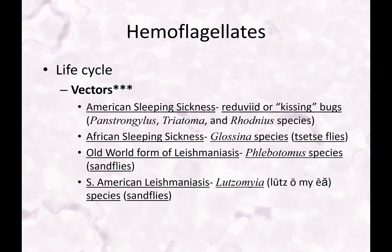Hemoflagellates have vectors. We have American sleeping sickness — this is the reduvid, or kissing bug: panstrongylus, triatoma, and rhodnius species. We have African sleeping sickness — the glossina species, the tsetse fly. And then we have old-world form leishmaniasis, which is the phlebotomus species, the sand fly. South American leishmaniasis is the lutzomyia species, also sand fly.